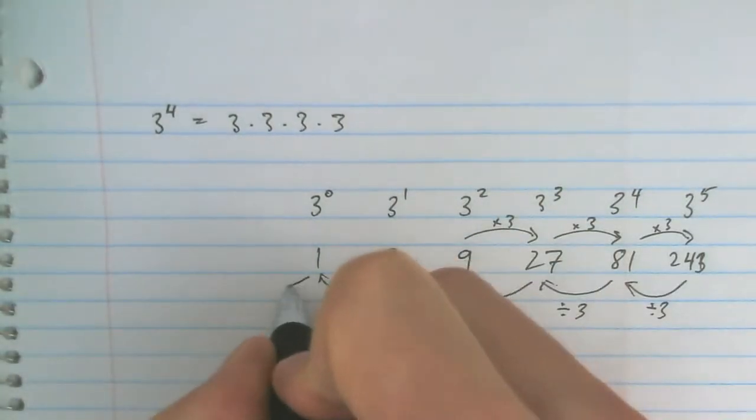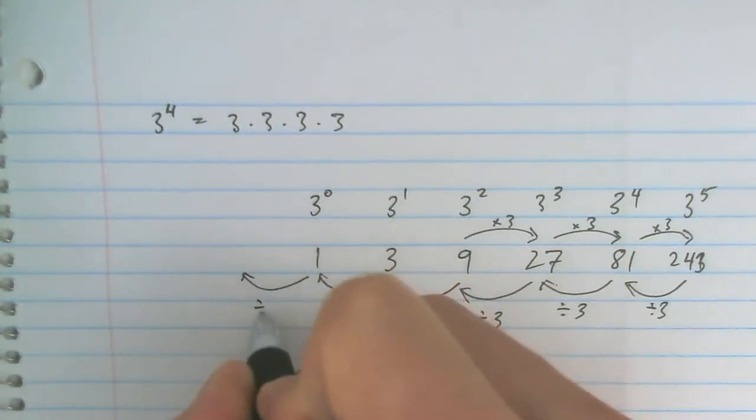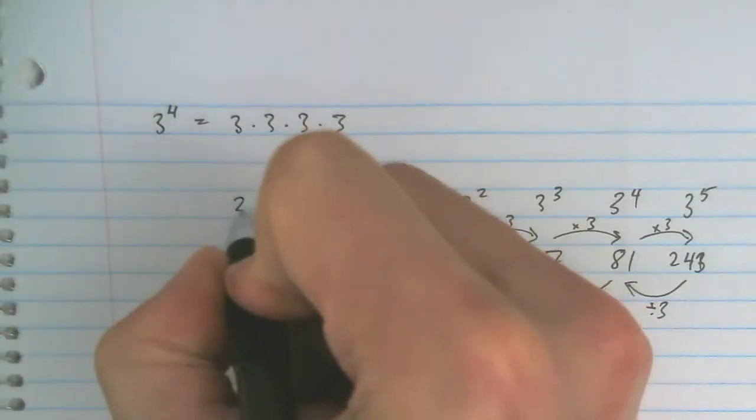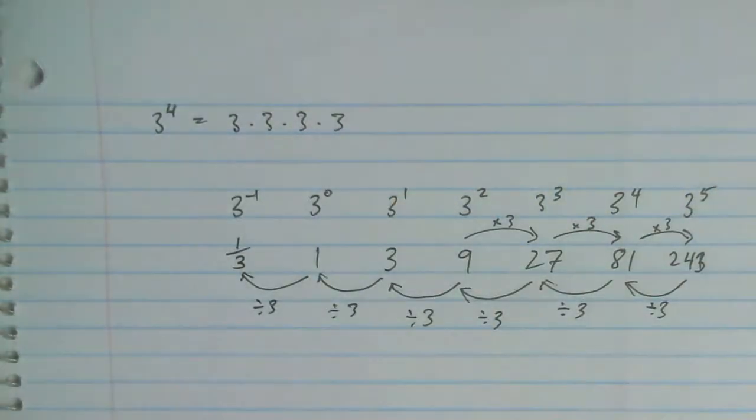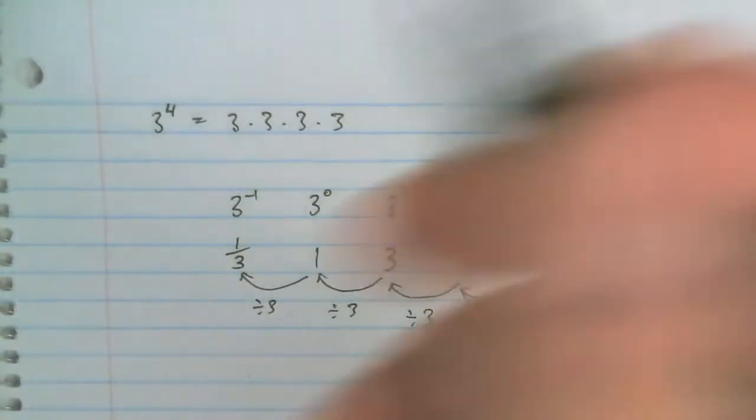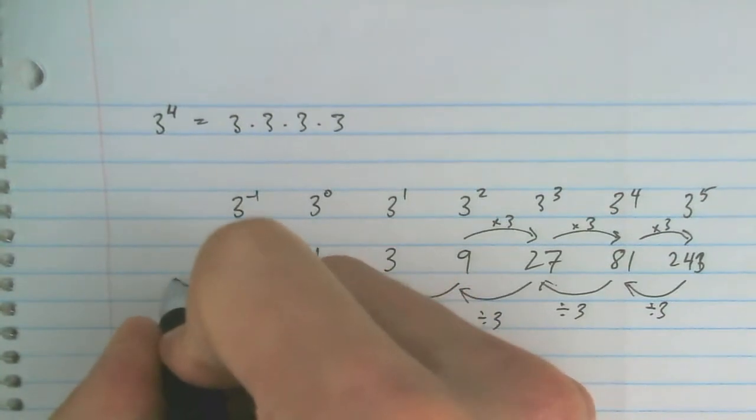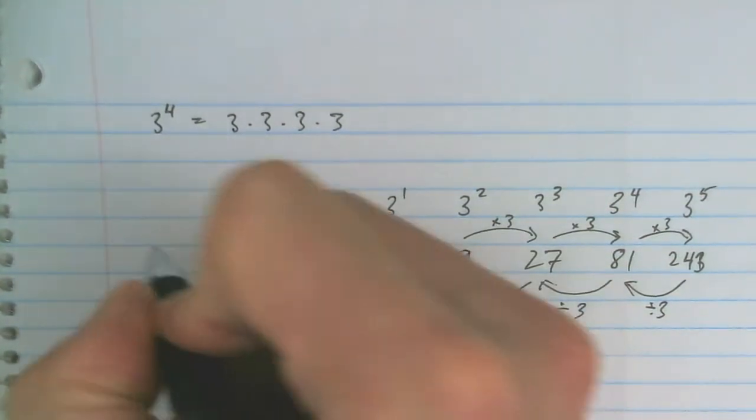And what if we took 1 and divided that by 3? I would get 1 third. And if I divided it by 3 again, I would get 1 ninth.